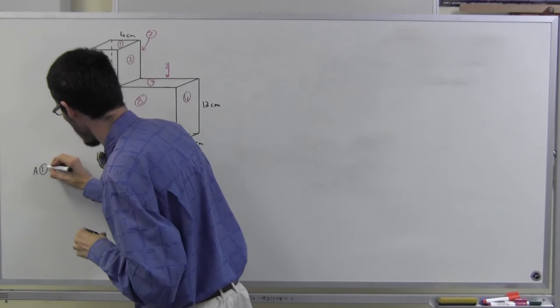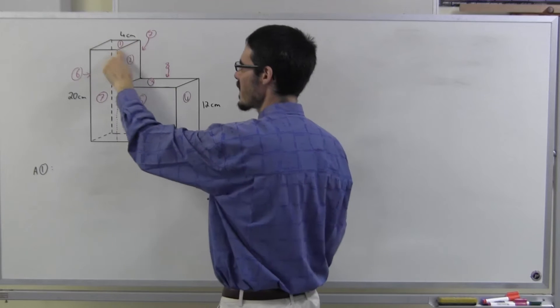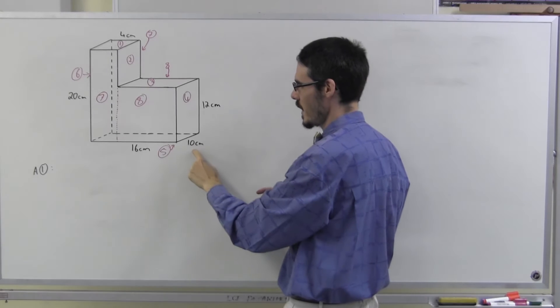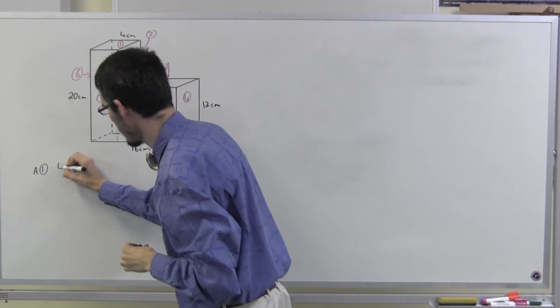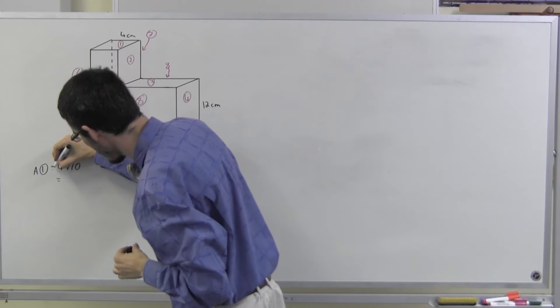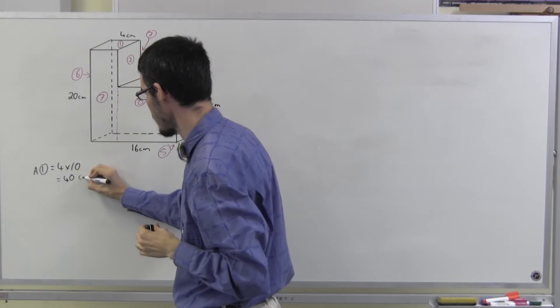Area one rectangle, four by, oh, how long is that? It's going to be the same as all of them. It's the depth of the shape, 10 centimeters. Which is 40, 40 square centimeters.